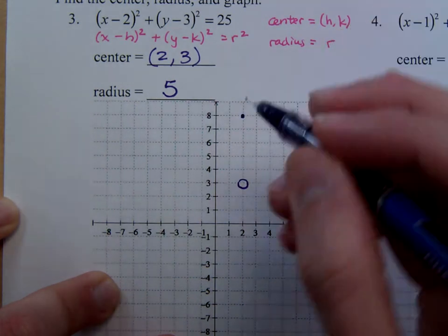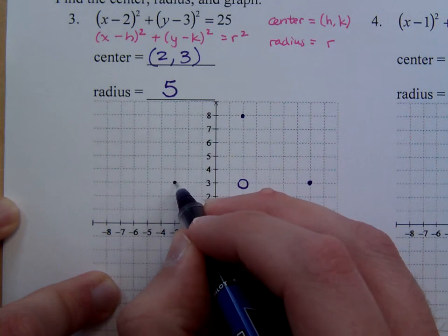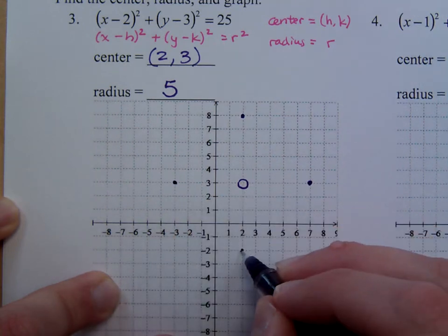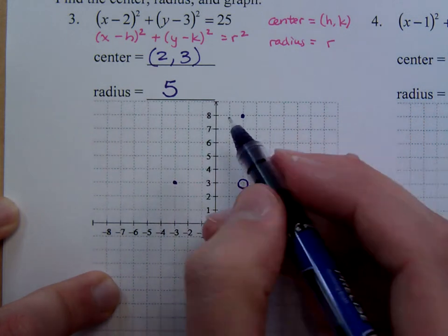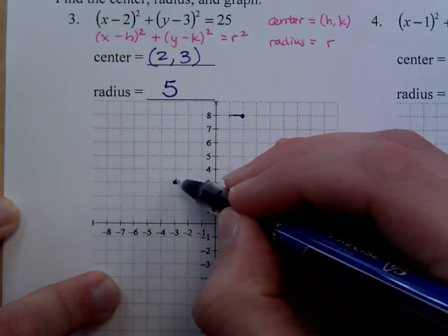Go 5 units up, 5 units to the left, and then 5 units down. And then you do your best to draw a circle.